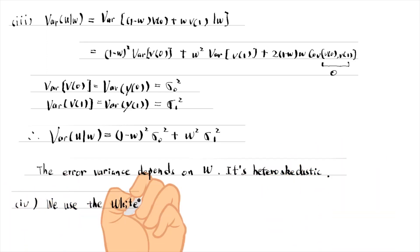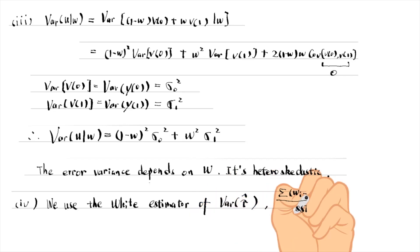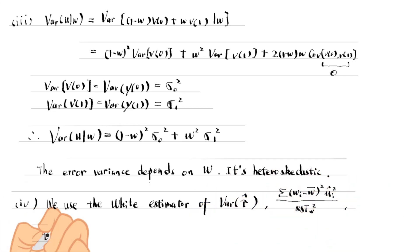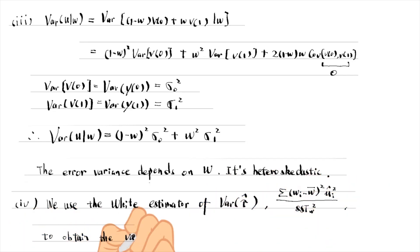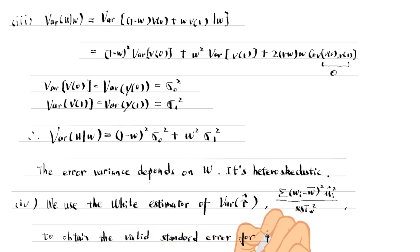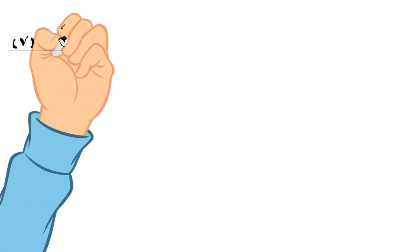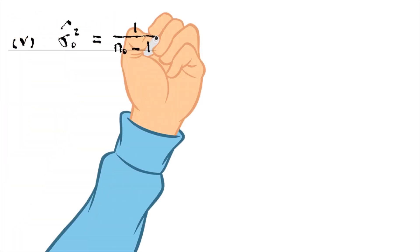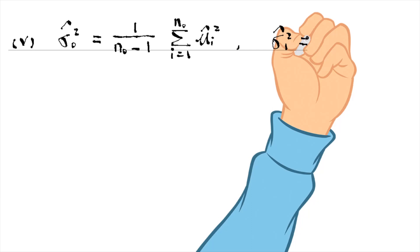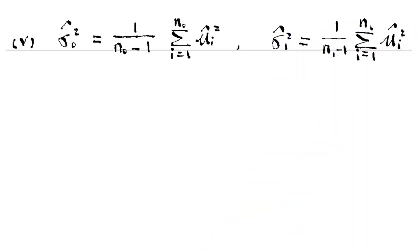For part 4, we use the White estimator of the variance of tau-hat to obtain a valid standard error for tau-hat. For the last part, after obtaining the OLS residuals, we can estimate sigma-0-squared using the n0 observations for the outcome y0. Similarly, sigma-1-squared can be computed using the n1 observations for the outcome y1.